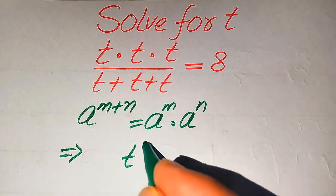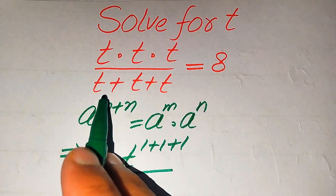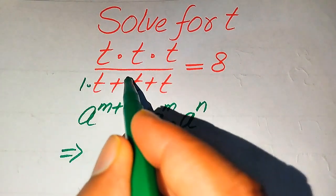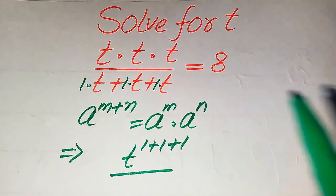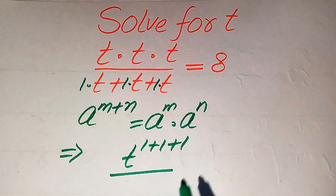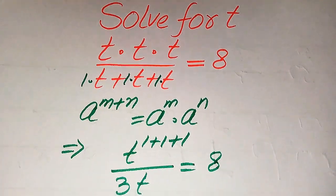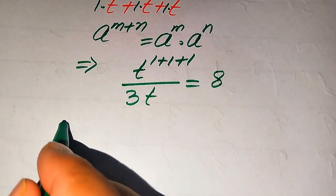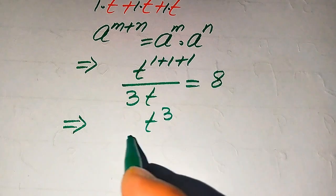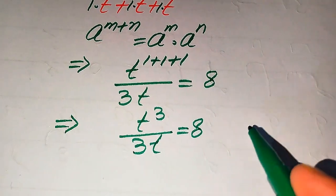When we add the exponents it becomes t to the power of one plus one plus one. For the denominator, when we add three same variable terms we add the coefficients — the coefficient of all three terms is one — which means this becomes three times t. So we have t cubed divided by 3t is equals to 8.